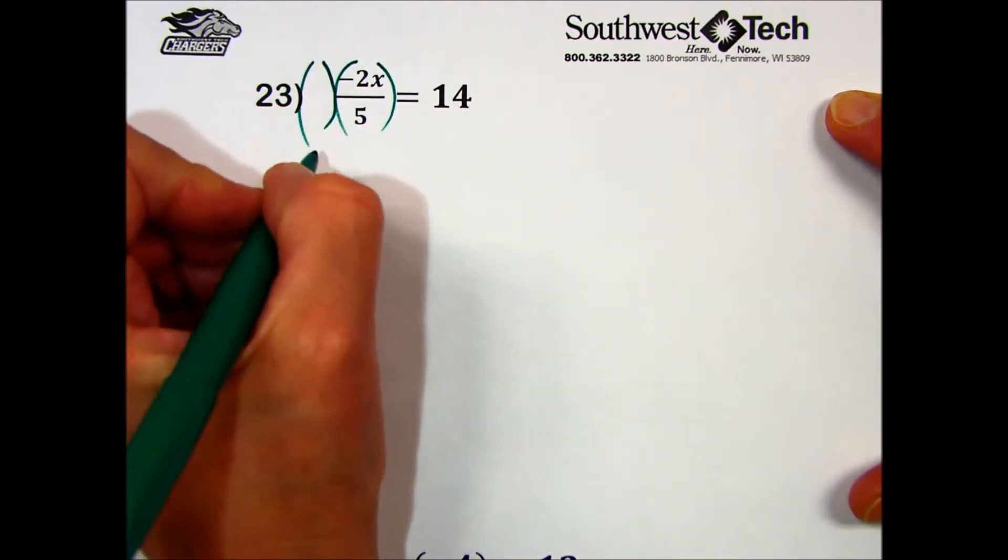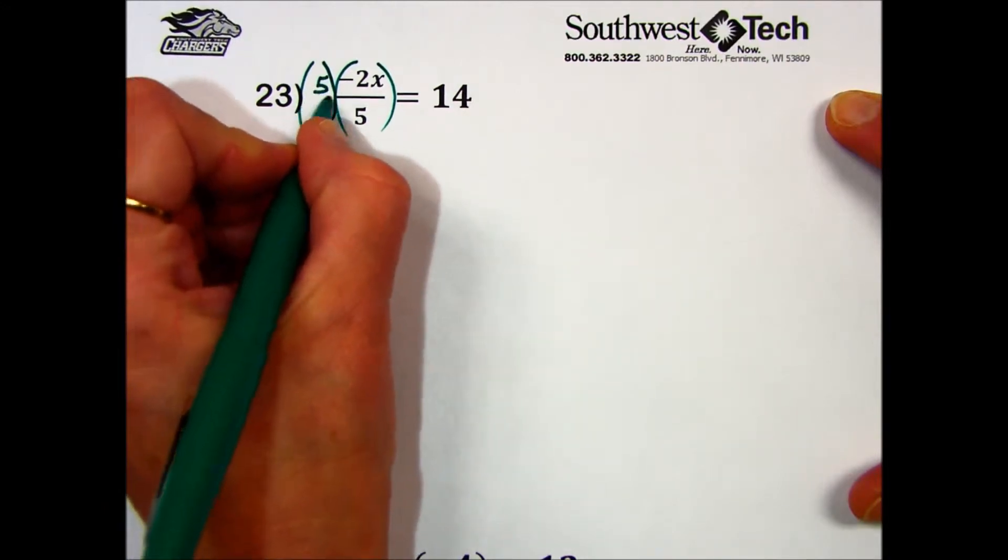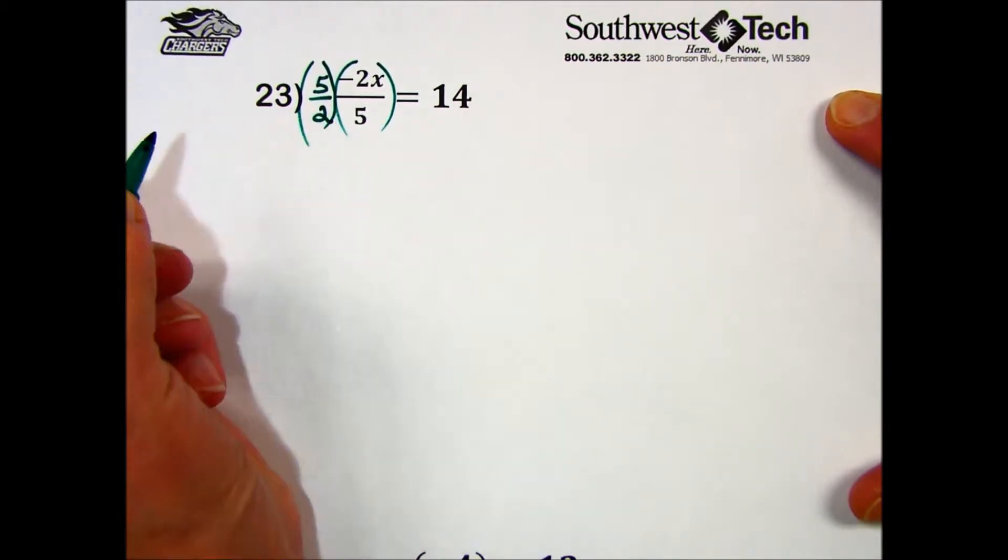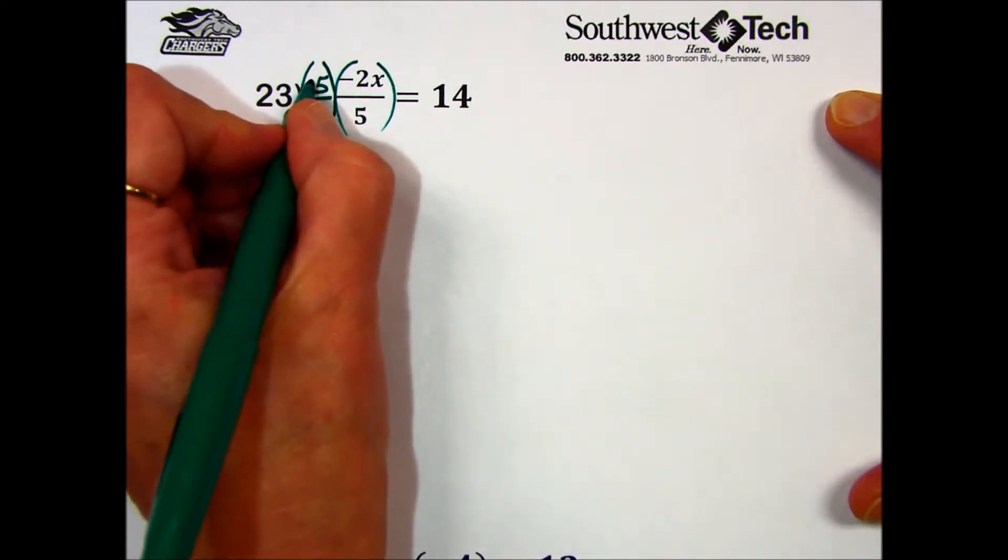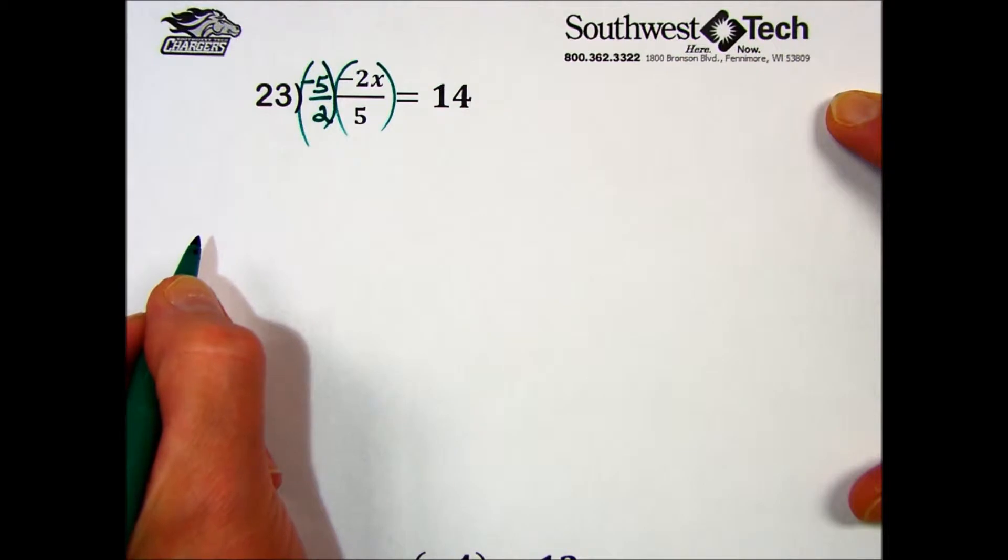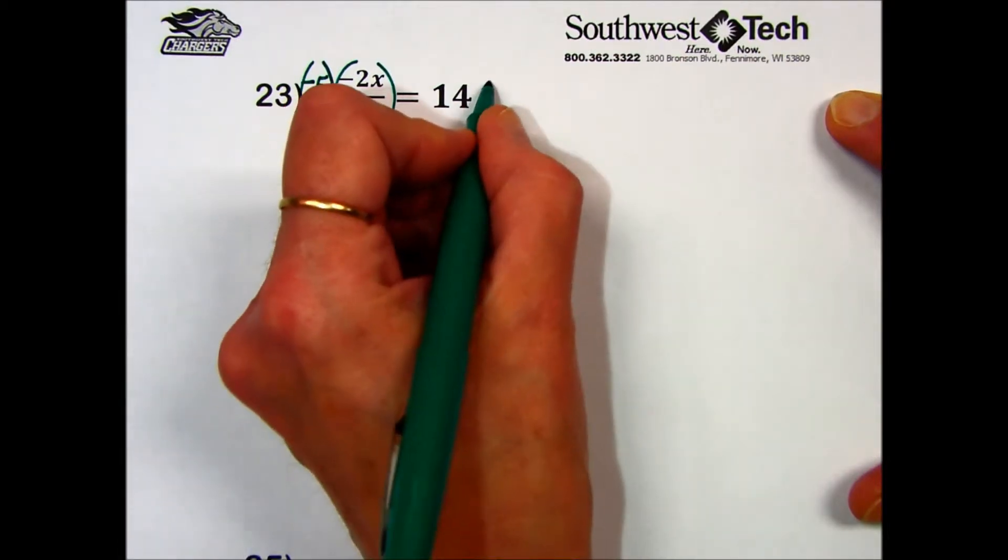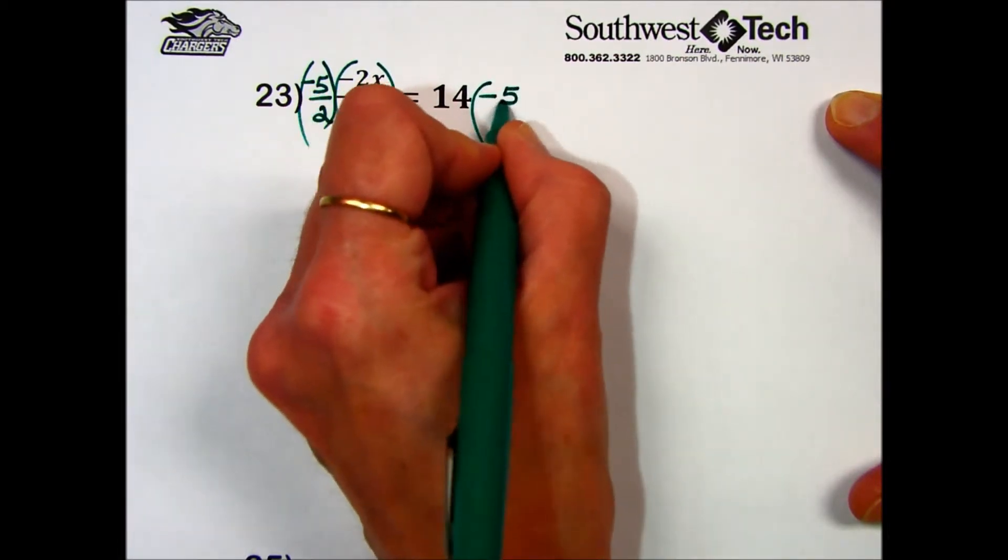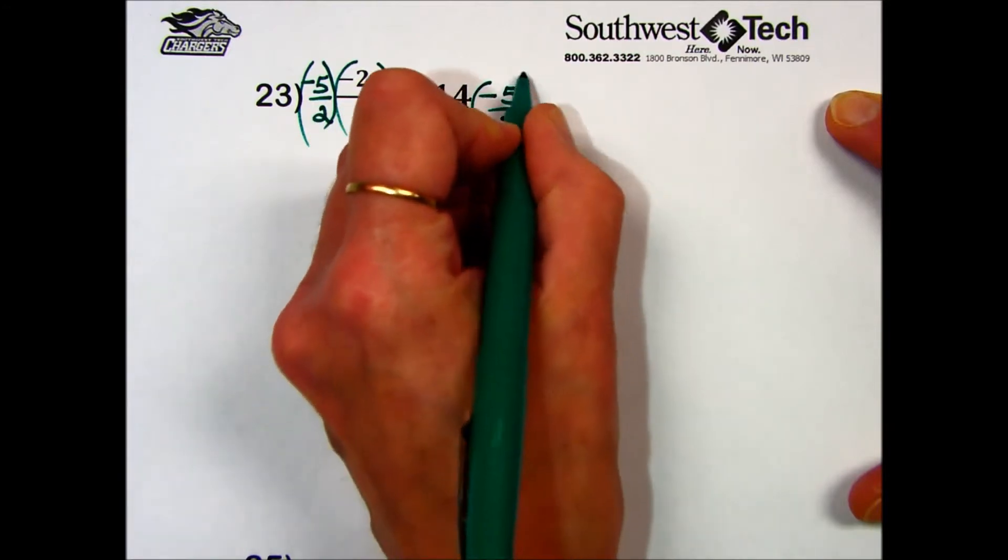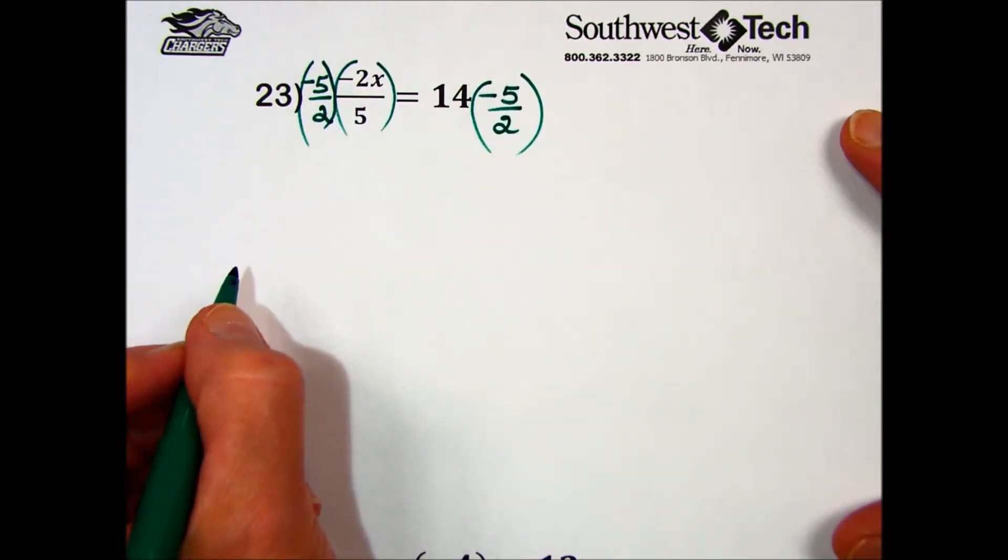The reciprocal of 2 fifths is 5 halves, and because it's a negative and we want a positive variable, I'm going to make that 5 halves a negative 5 halves. What I do to one side, I need to do to the other side, so both sides are being multiplied by negative 5 halves.